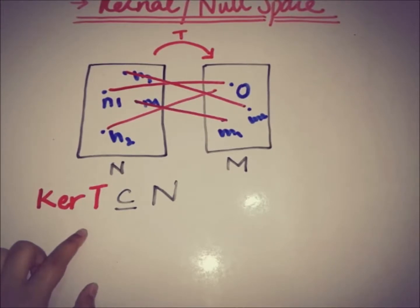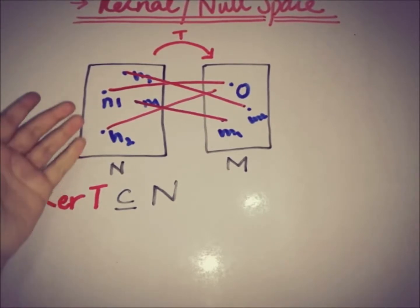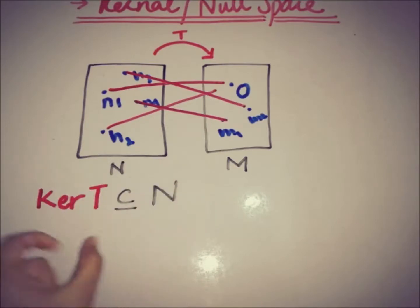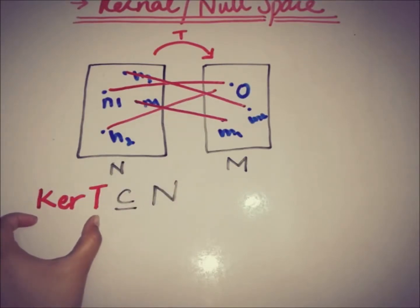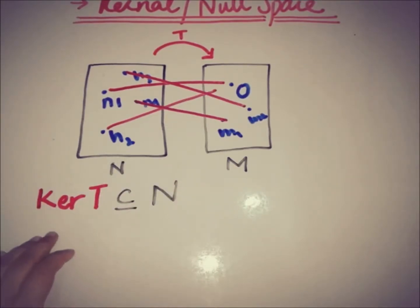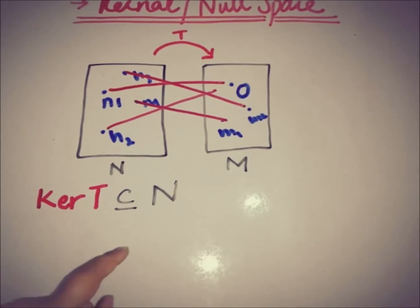We can write: kernel of T, ker(T), is the set of those elements of N which are mapped onto the zero element of M. This is not only a subset of N but also a subspace of N. Now let's prove that this is indeed a subspace of N.